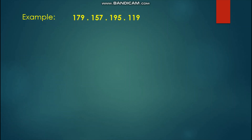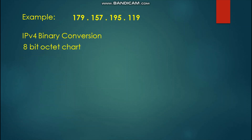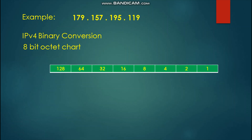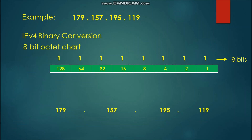Let us have an example of a decimal IP address representation. We are now going to begin the IPv4 binary conversion. For that, we will be needing an 8-bit octet chart. Let us place the decimal IP address at the bottom of our table.